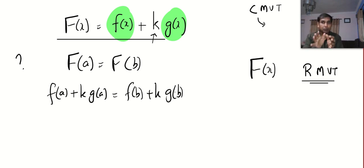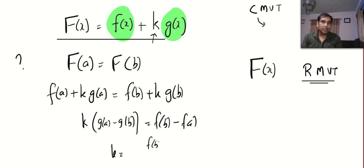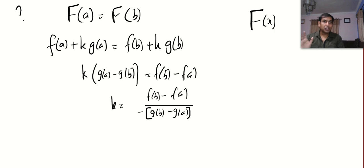Don't watch this proof until you have watched the proof of Lagrange's theorem because it's similar. We get k into g a minus g b is equal to f b minus f a, or k becomes f b minus f a by g b minus g a. The conclusion is if you put k equal to this then capital F of x will satisfy all the conditions of Rolle's theorem.